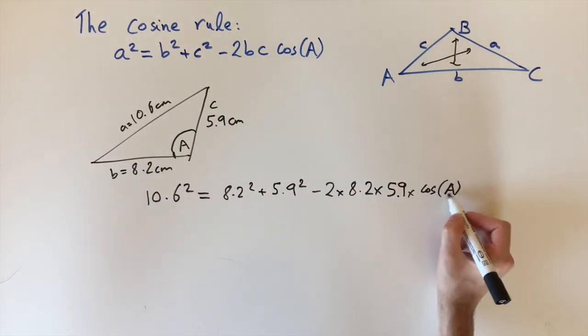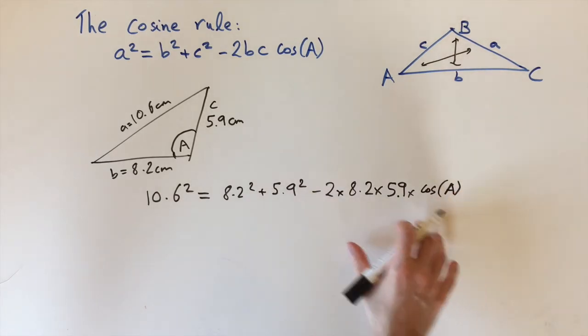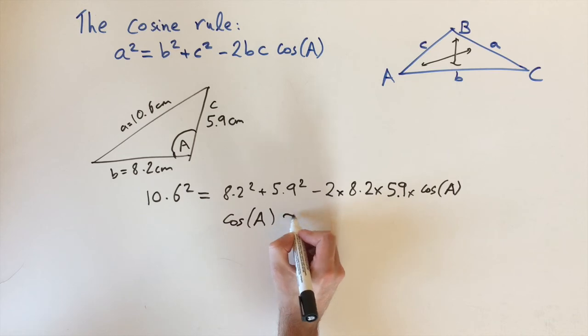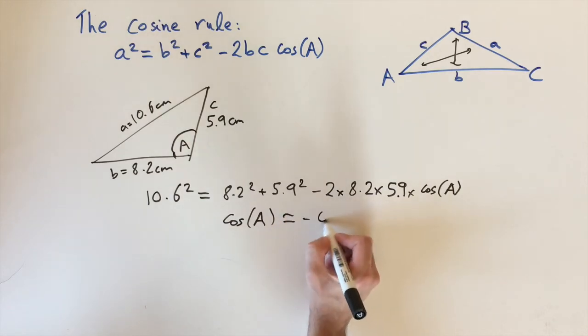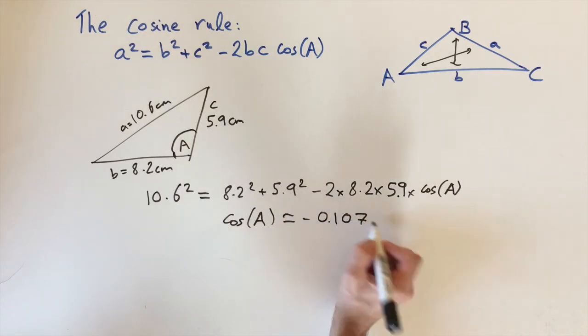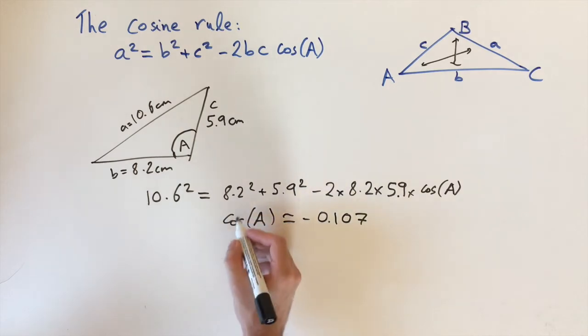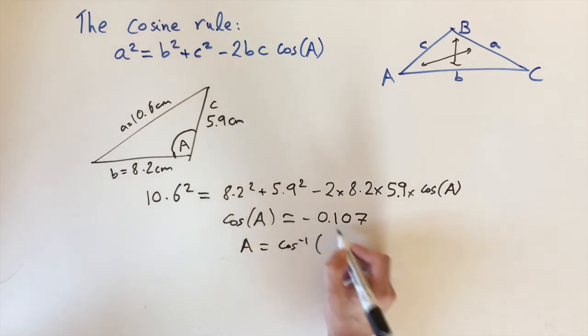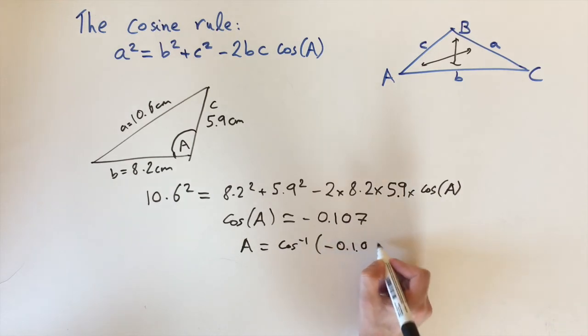Now A is what we're trying to solve for, so we can just simplify this and rearrange to get everything in terms of cosine of A. If you do the algebra, you'll get that cosine of A is approximately minus 0.107. Then to find A, you just need to invert cosine, so A is cosine to the power of minus one of minus 0.107.